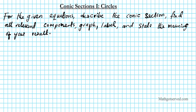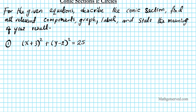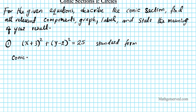For question one, we're going to consider the conic with the given equation (x+3)² + (y-2)² = 25. What kind of conic is this? We have two squares and a plus in between, and the denominators are the same — both 1. So this is the equation of a circle. This is standard form, and the conic is a circle.